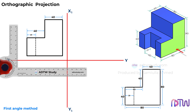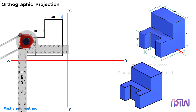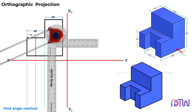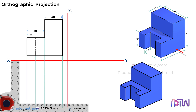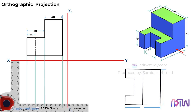Next we will draw the top view. To do so, we will project lines from the front view as shown. These lines will help us in drawing the top view. When we view this figure from the top, it will look like this. In the isometric view, the length and width are 80 millimeters. The width of this portion will be 40 millimeters, and the slot will be 40 millimeters in length and 20 millimeters in width, at a distance of 20 millimeters from the top, exactly in the middle.